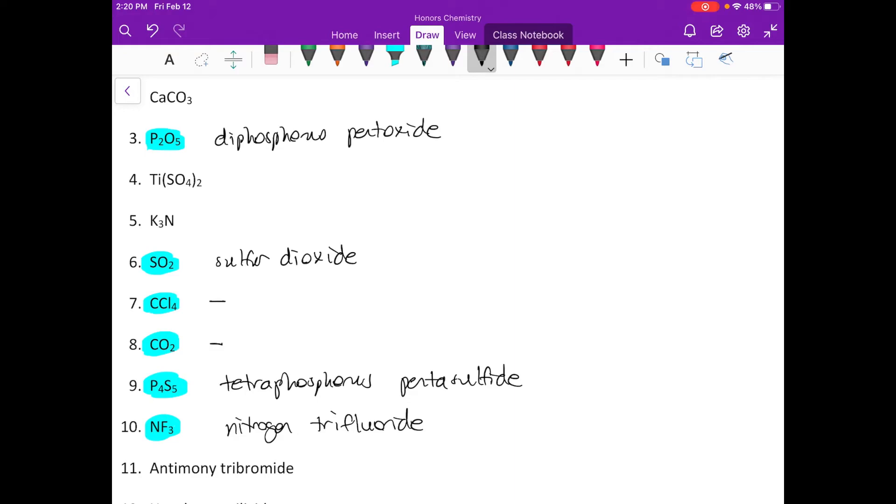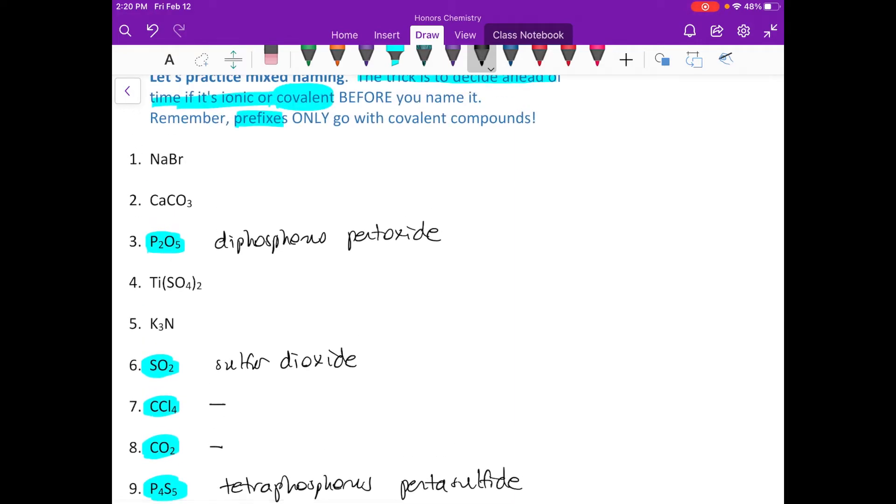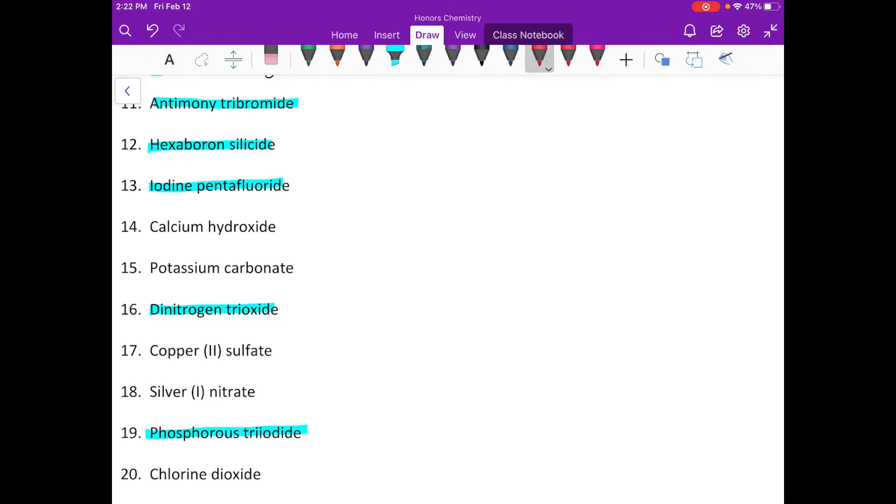Those are my covalent ones, everything else is ionic. So let's go through and I'm going to pause the video and you name the ionic ones, and then we'll go over them together. Now finding the covalent ones here was very easy because I just looked for anything that had prefixes in it. I didn't even look for nonmetals, which is what I should have done. I just went through and found everything with prefixes in it, and that's how I knew that it was covalent. So now let's go through and name these. Antimony, what is antimony? Sb tribromide. Hexaboron, B6 silicide, Si. Iodine pentafluoride.